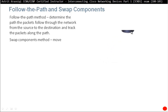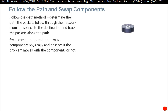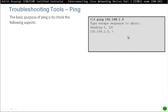Another method is to swap components — move components physically and observe if the problem moves with the component. For example, if this router has a problem, the easiest approach is to get another router with a similar configuration, swap it in, and see if the problem goes away. If it does, the router was the problem.